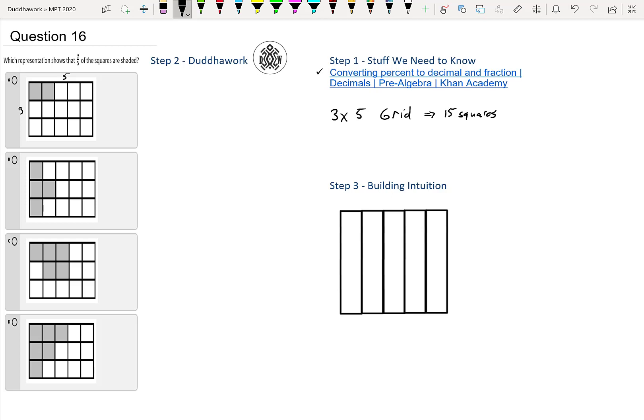What we can do is just count the number of squares that are shaded, which for A it is 2 over 15 and for B it is 4 over 15. For C it is 5 over 15 and for D it is 6 over 15.